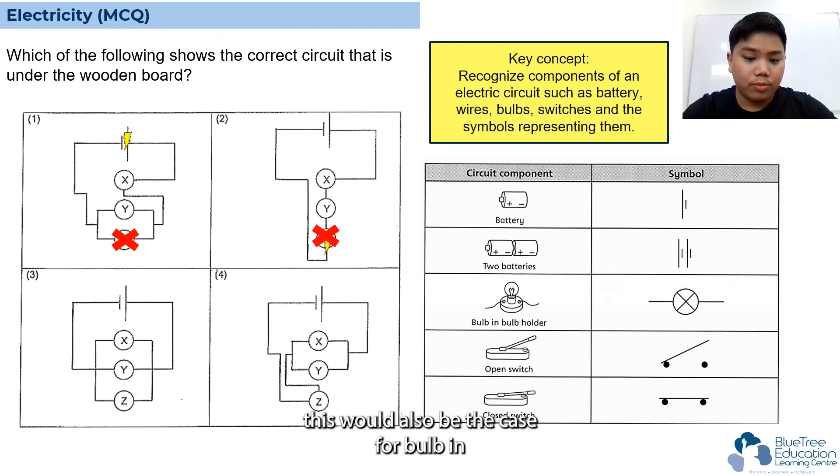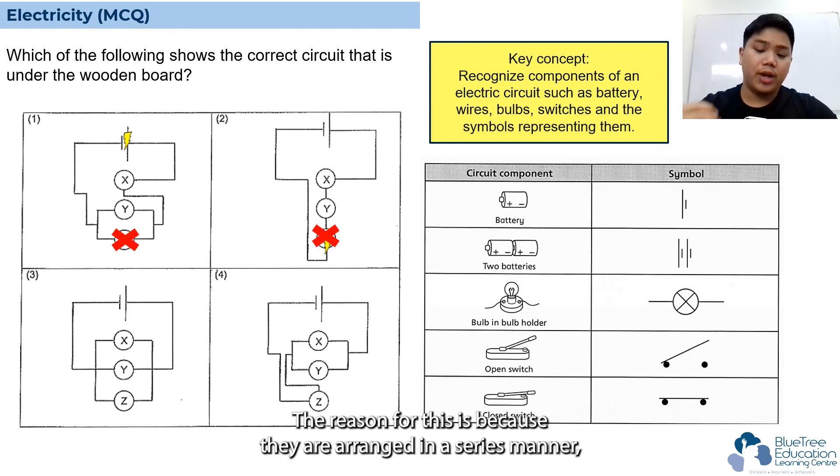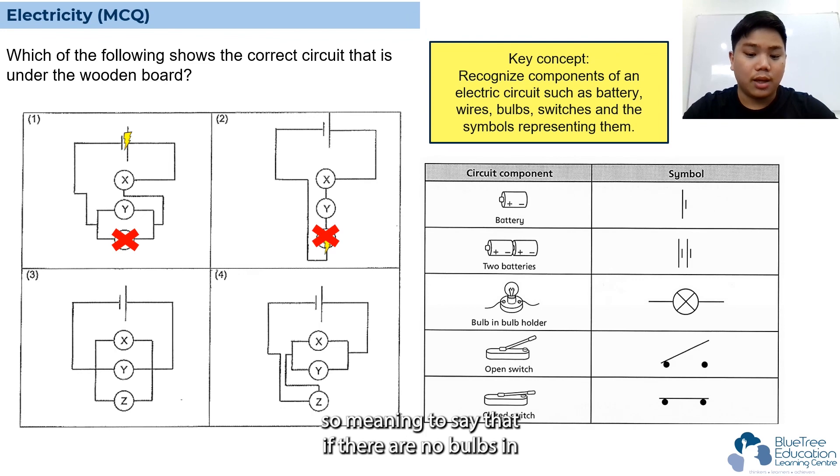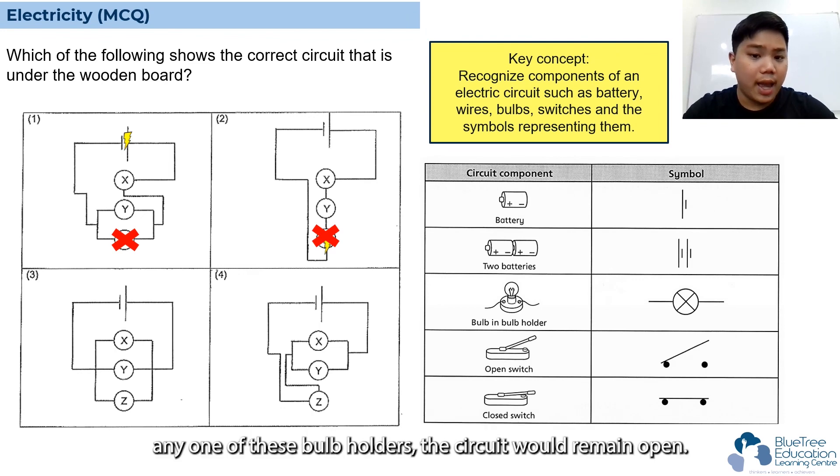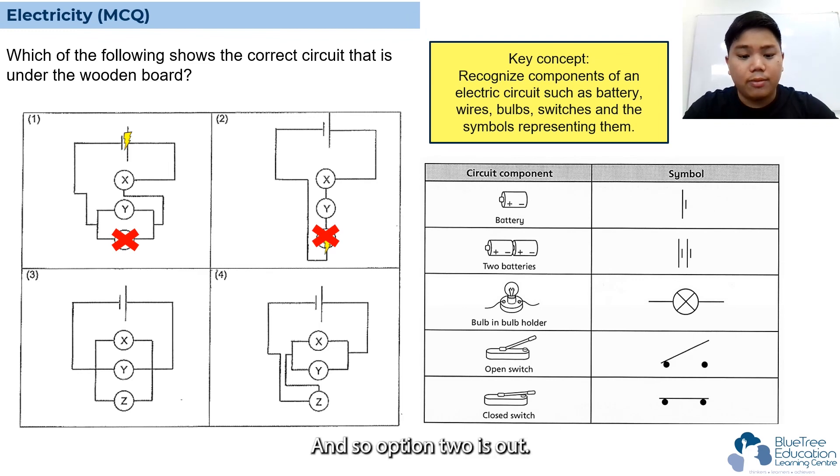The reason for this is because they are arranged in a series manner, meaning that if there are no bulbs in any one of these bulb holders, the circuit would remain open. So option two is out.